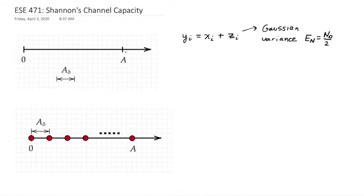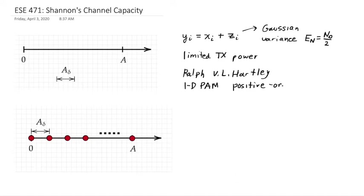We also have a limited transmit power. The first channel capacity theorem for limited transmit power came from Ralph Hartley. In the early 1900s, Hartley came up with this capacity theorem for a one-dimensional PAM system limited to positive only amplitudes. This was the case when they were doing telegraph. So the amplitudes are from 0 to A, and the question was, how many symbols can I place between 0 and A and still have a reliable communication system?